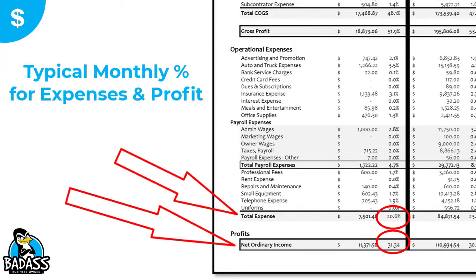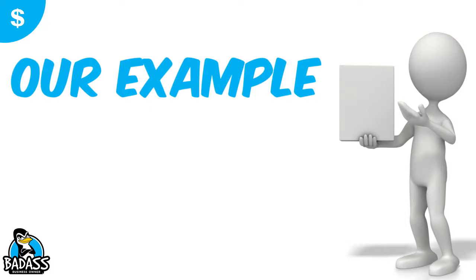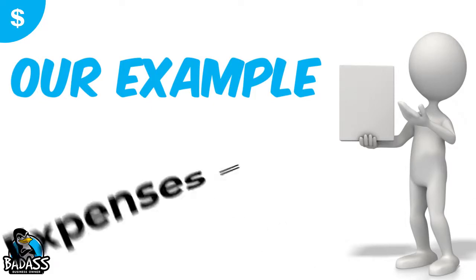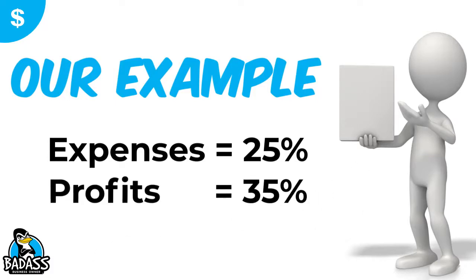When we're setting up our pricing, we keep these numbers in mind. In this fictional business, our expenses typically run 25% and our profit target is 35%, because that's what we're going to pay ourselves out of — that profitability.